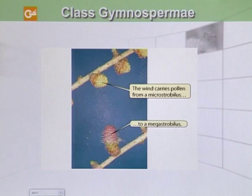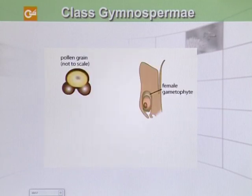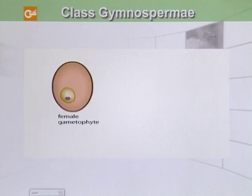In the case of Pinus, both micro strobili and mega strobili are present on the same plant. The pollen grains are carried by wind to the female gametophyte, where they fertilize it.